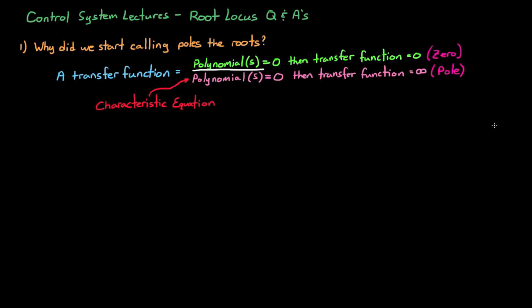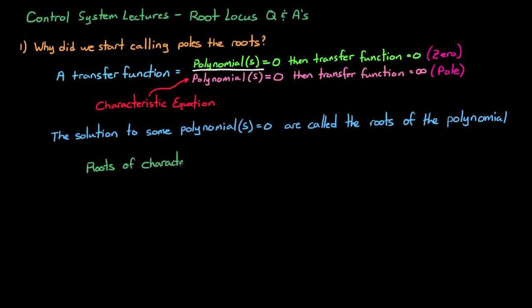So now we understand the poles and zeros of a transfer function. To solve for them, we're setting the polynomials equal to zero and then solving for the roots of the polynomial, or the solutions. So zeros are the roots of the numerator, and poles are the roots of the characteristic equation or the denominator. And those roots are what we're plotting in the root locus. So in this case, roots of the characteristic equation and the poles of the system are the exact same thing.